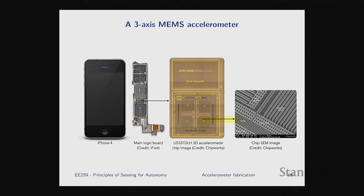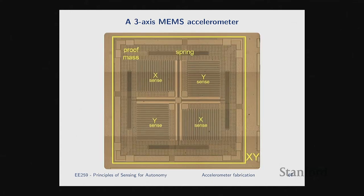If we zoom in on the XY part of the device, you see your springs, your capacitive fingers, and your proof mass — which is like all around plus a cross-like structure at the center.